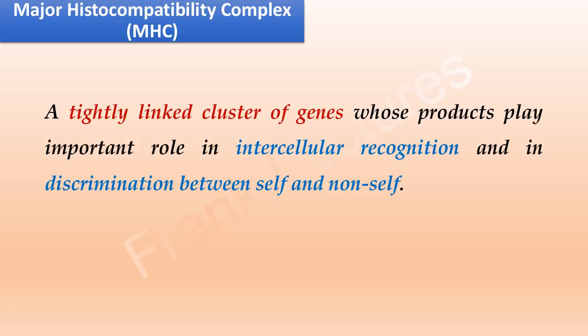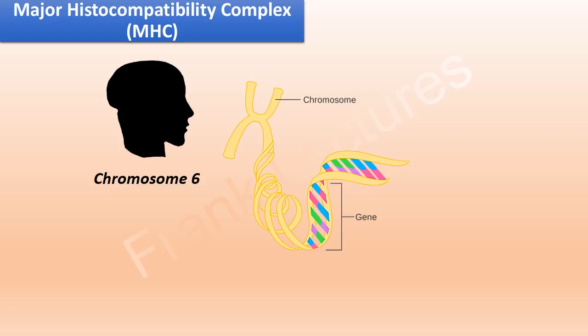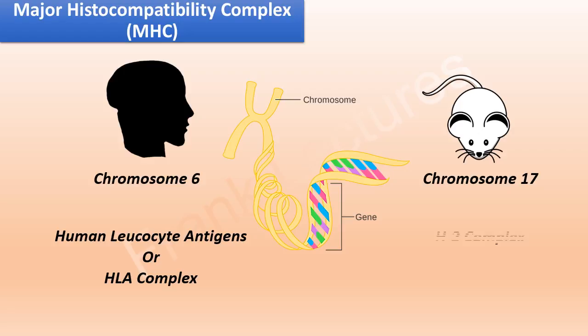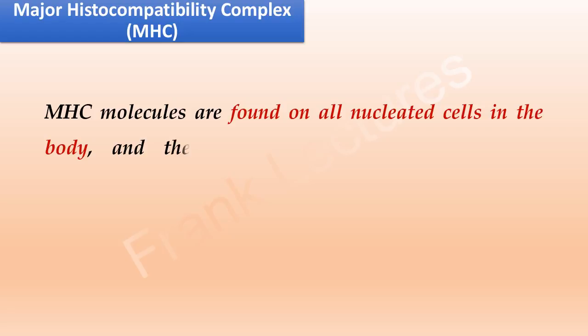In humans, the major histocompatibility complex is present on chromosome 6 and is known as the human leukocyte antigen complex, abbreviated as HLA. In mice, it is present on chromosome 17 and is known as the H2 complex. MHC molecules are found on all nucleated cells in the body and play an important role in the development of both humoral and cellular immunity.